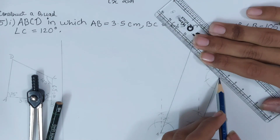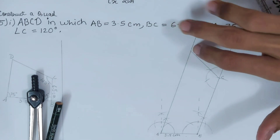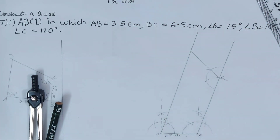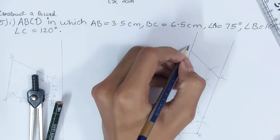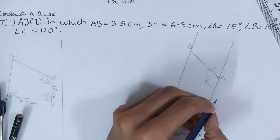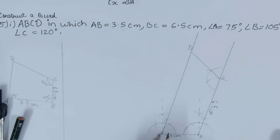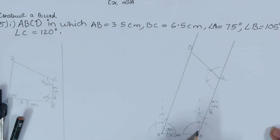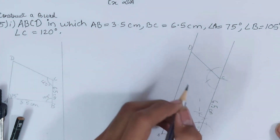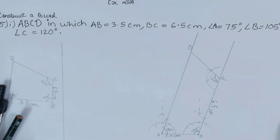Join point C through the 120° intersection, making sure the line touches point A's line as well. The point that is now formed is point D. Label BC = 6.5 cm, angle A = 75°, angle B = 105°, and angle C = 120°. The quadrilateral ABCD is now complete.